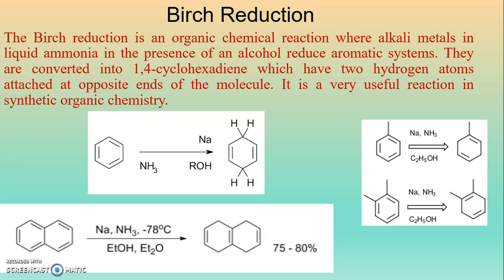What is Birch Reduction? The Birch Reduction is an organic chemical reaction where alkali metals in liquid ammonia in the presence of an alcohol reduce aromatic systems. They are converted to 1,4-cyclohexadiene, which have two hydrogen atoms attached at opposite ends of the molecule. It is a very useful reaction in synthetic organic chemistry.